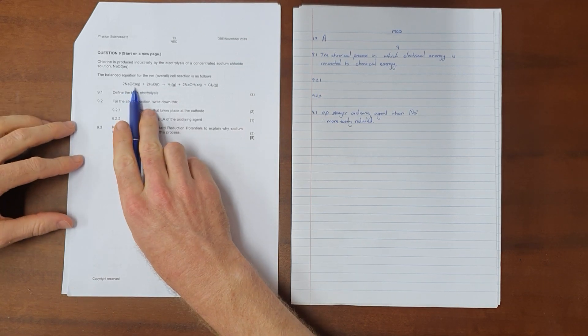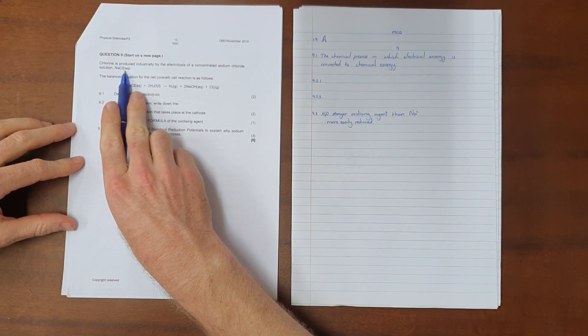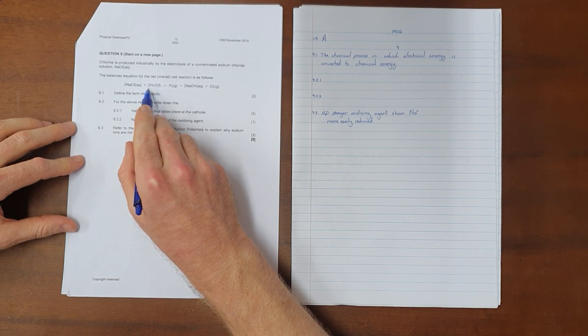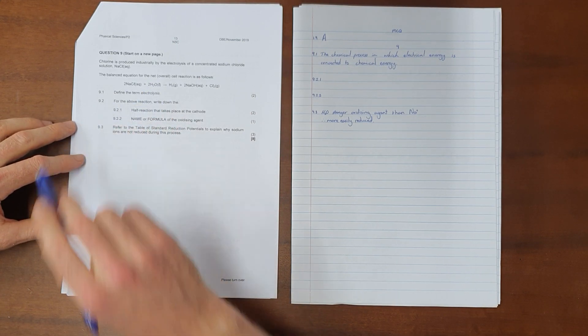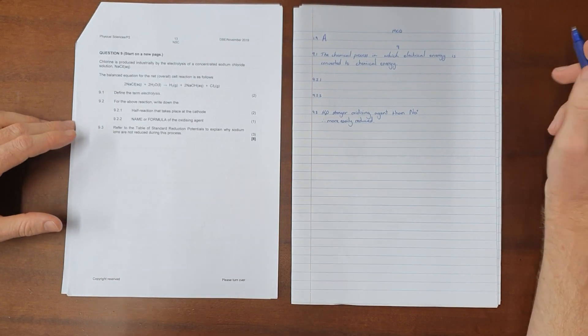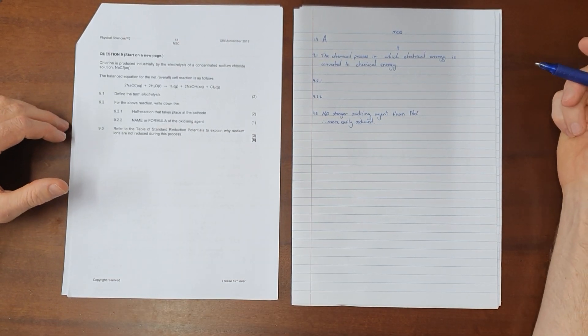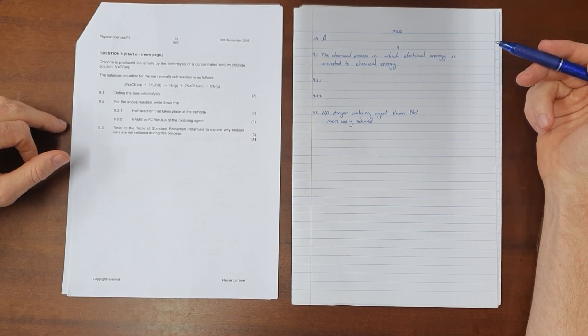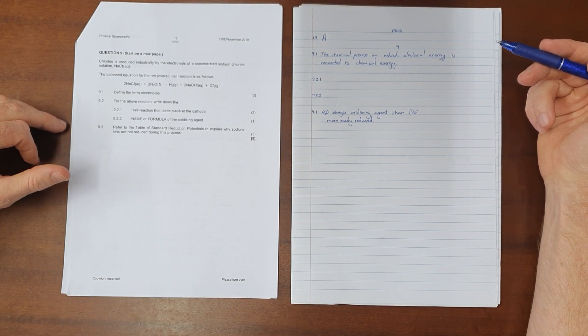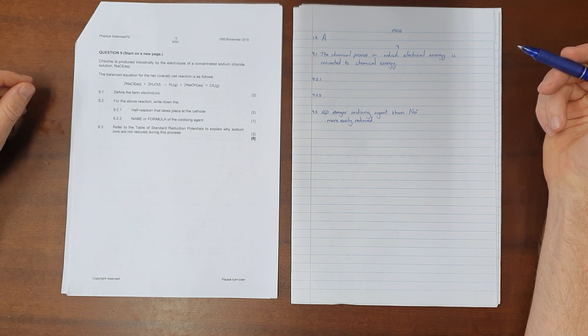Important to see here that they have specified that this is aqueous NaCl, again highlighted by the presence of water here. Question 9.1 defined the term electrolysis. The definition as given in the guideline document is the chemical process in which electrical energy is converted to chemical energy.